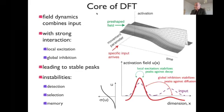Fields are defined over low dimensional metric spaces and they receive input that reflects these spaces, which is typically localized. There is localized input here as a peak, and they have strong patterns of interaction — local excitatory, global inhibitory — that makes for peaks, selection decisions, detection decisions, working memory and so on.